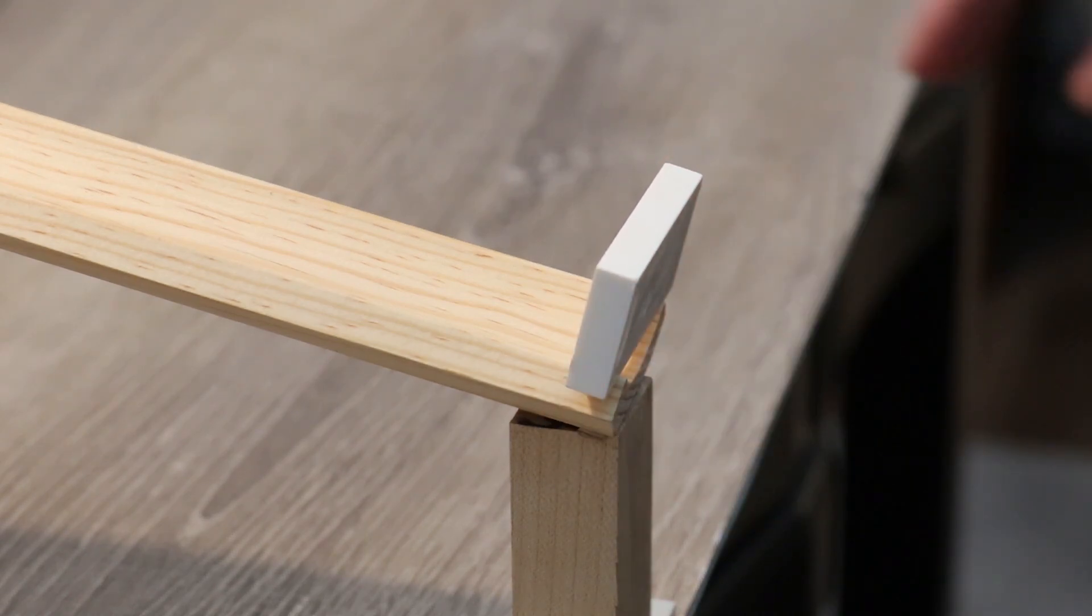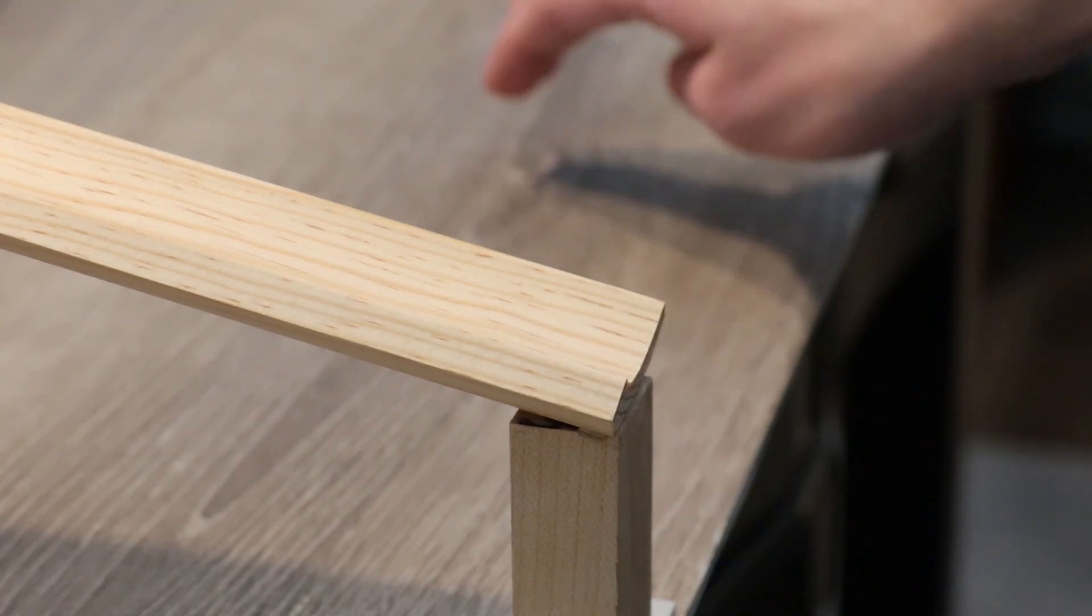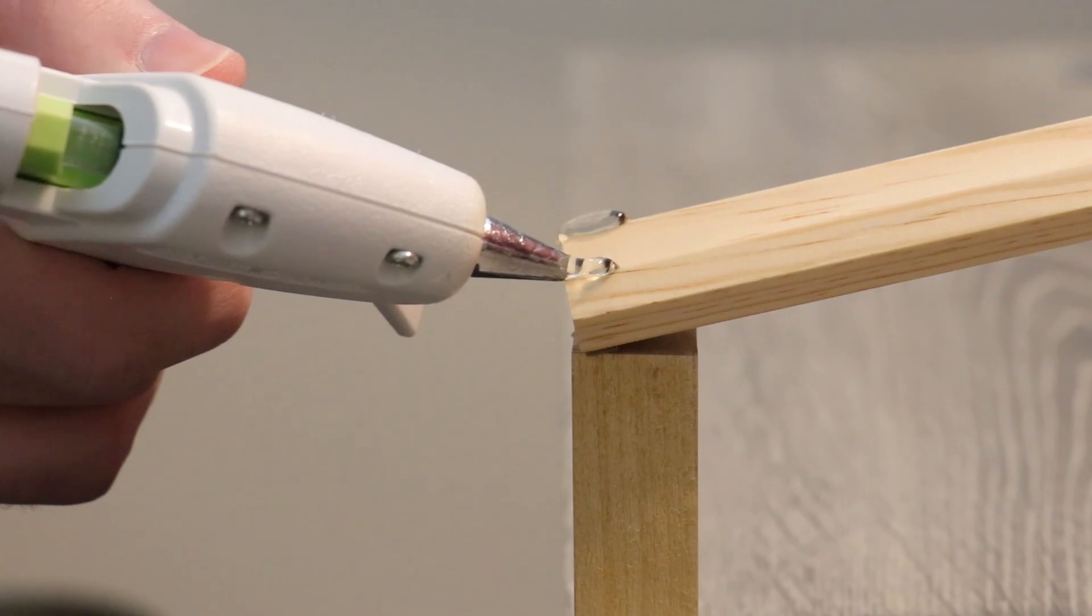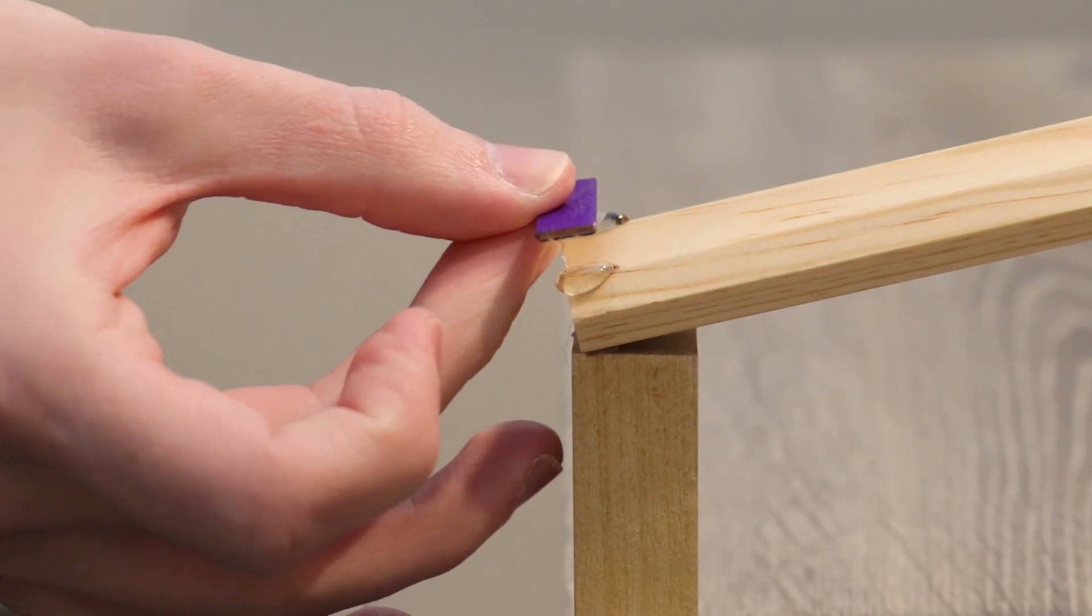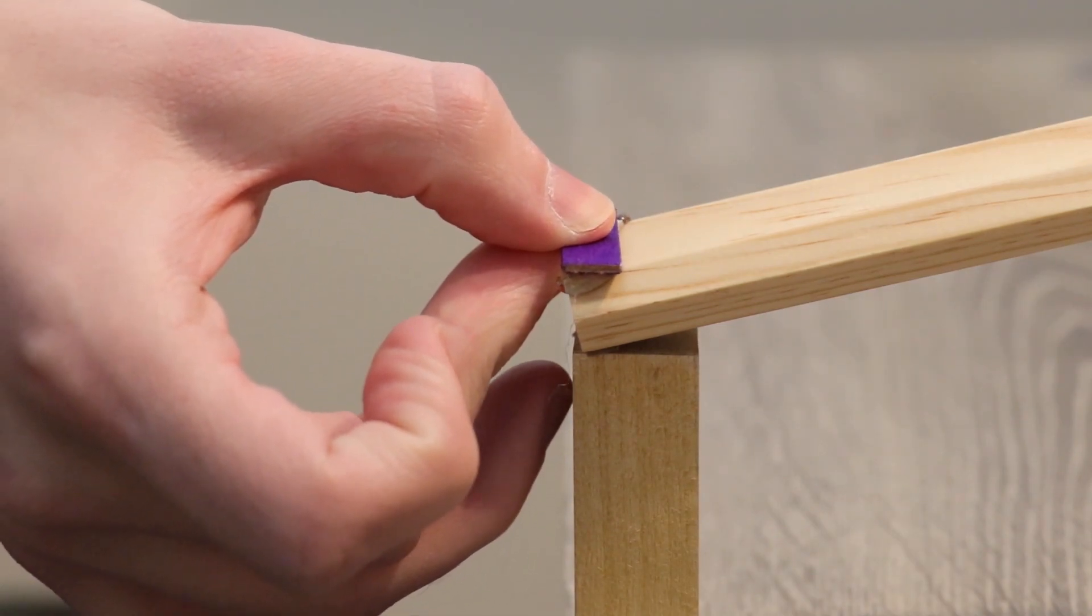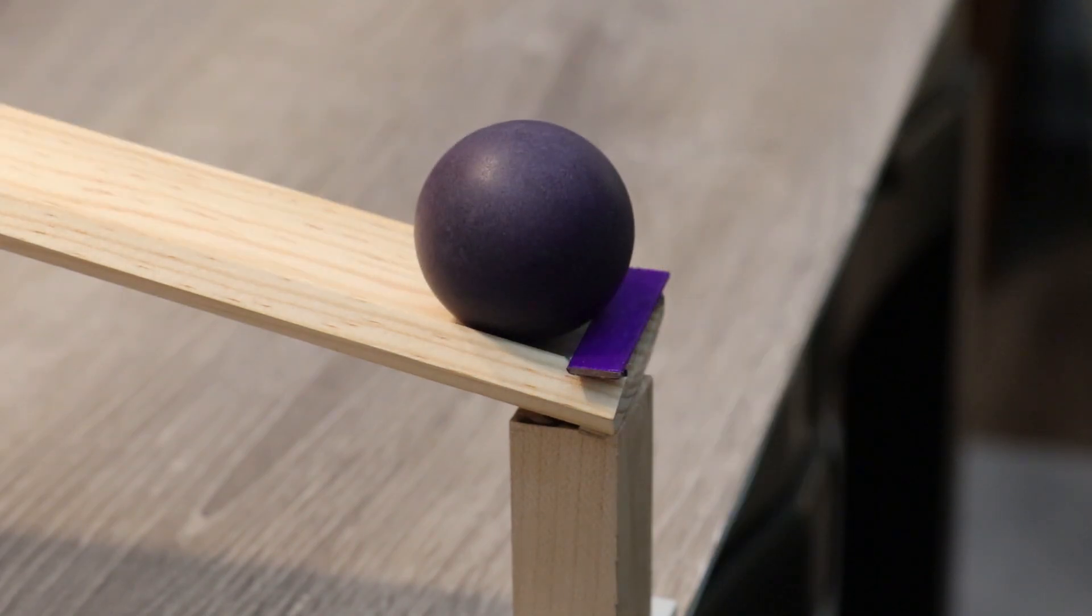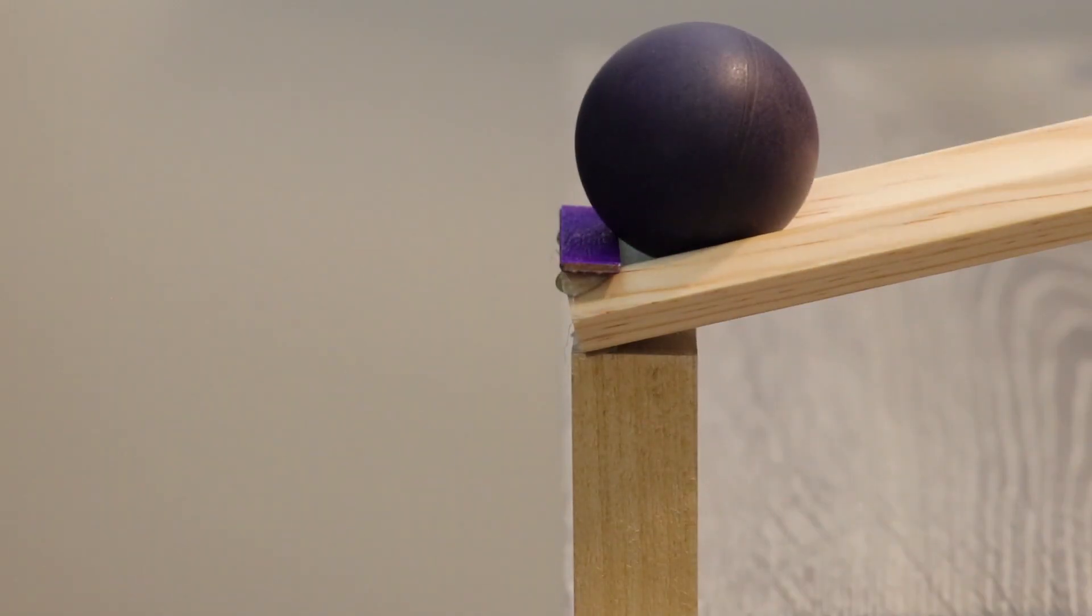In certain cases, the end of track stopper can actually solve two problems at once. Let's say you've got a track that's too sloped for the weight to actually stay at the end. If you add an end of track stopper and secure it in such a way so that it's parallel to the floor, what you've effectively done is created a platform to hold the weight that also doubles as an end of track stopper.